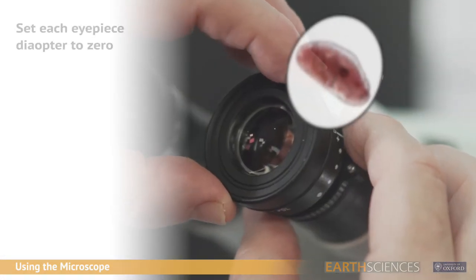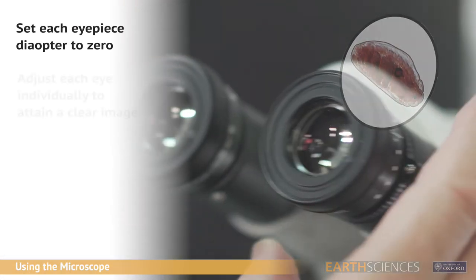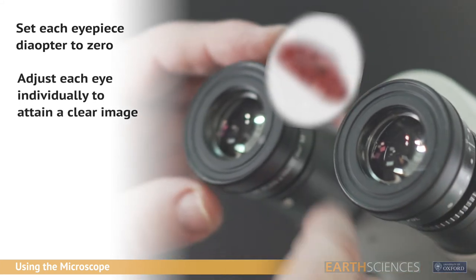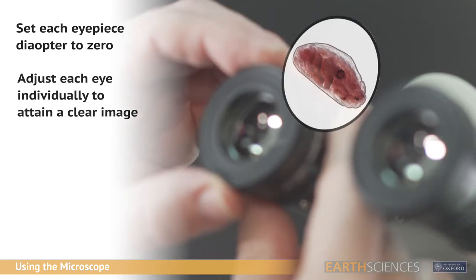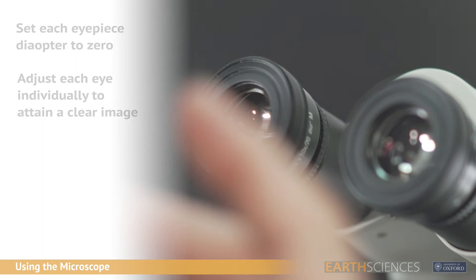To attain a sharp image based on your eyesight, rotate each eyepiece up to zero and adjust each eye individually until the image is most in focus. Then move on to the next eye.